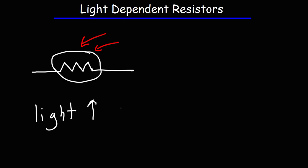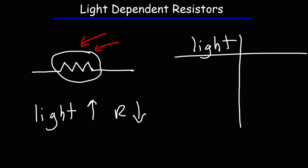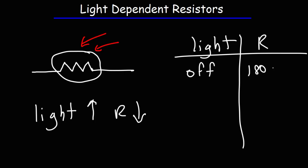When light shines upon the light dependent resistor, the resistance decreases. In my living room with the light turned off, the resistance of the LDR was about 180 to 220 kilo-ohms. I do have some ambient light since I measured this during the daytime with my blinds closed — if it's completely dark, the resistance can go up to a million ohms or more. But when I turned my living room lights on, the resistance dropped to 25K to 40K.